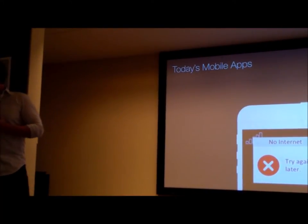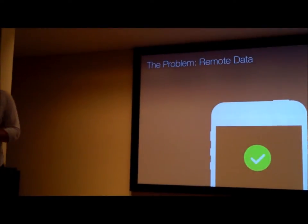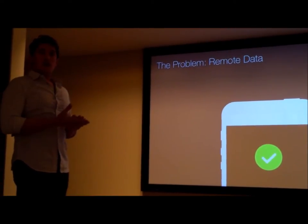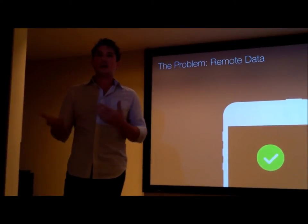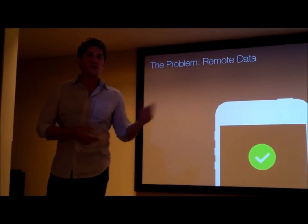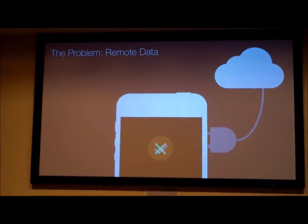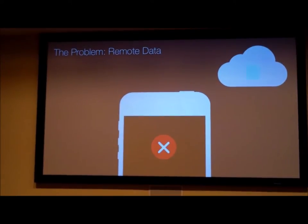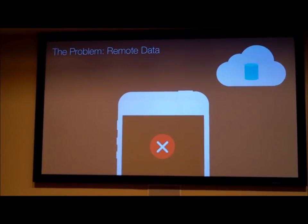Why is that a problem? The problem is actually the location of data. A lot of us look at this as a network dependency problem, but network dependency is actually a byproduct of the choice we made on where we store our data. When the network connection goes away, we don't have an application that works because the data is in the cloud — we need a network connection to get to it.